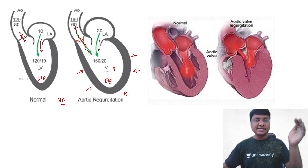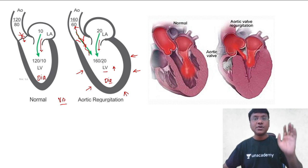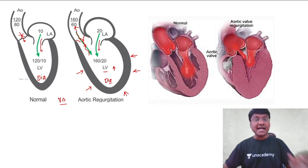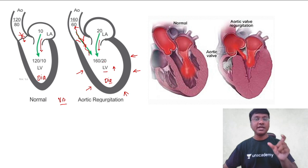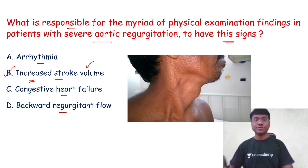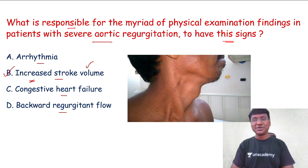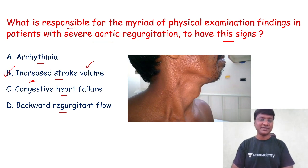During diastole, an excess amount of blood is coming back into the left ventricle, whereas during systole, an excess amount of blood is going into the aorta and subsequently into various systemic vessels — and that is what is responsible for the pulsations in various organs in patients with severe aortic regurgitation. So increased flow of blood going into the aorta during systole is your increased stroke volume, which is responsible for the development of these signs.